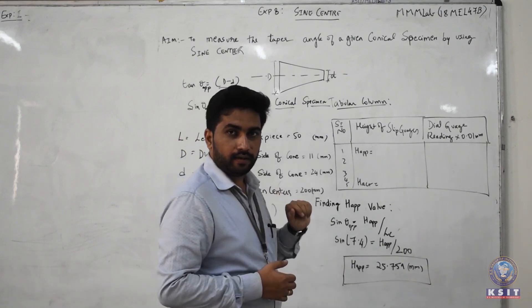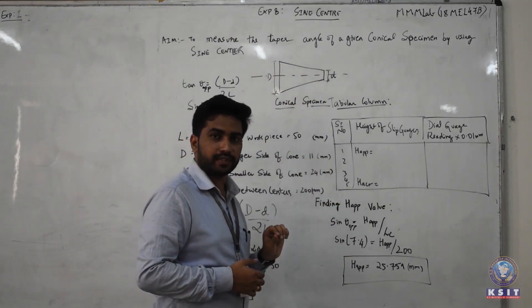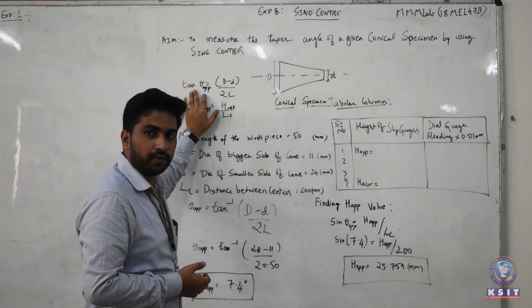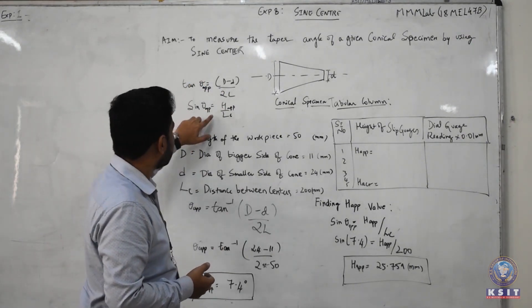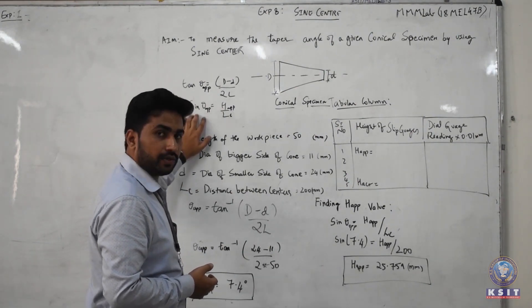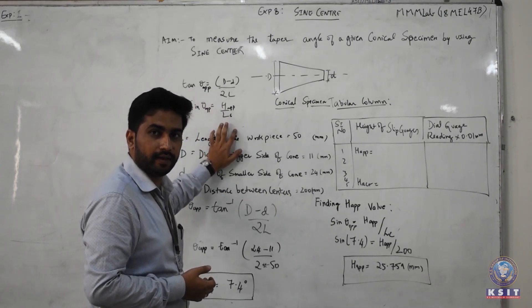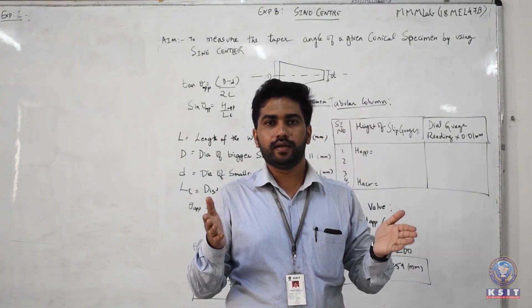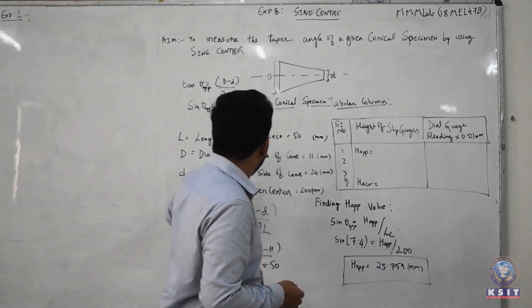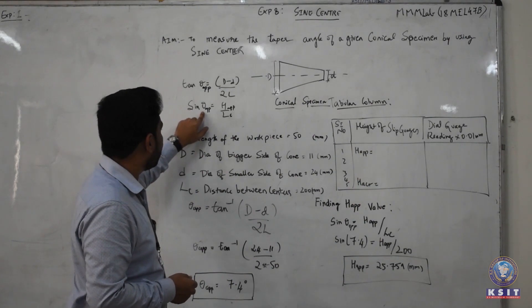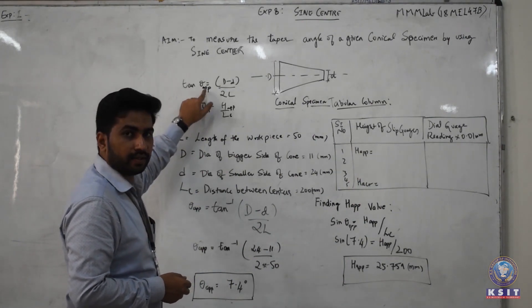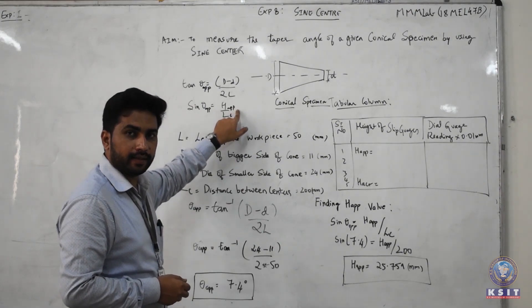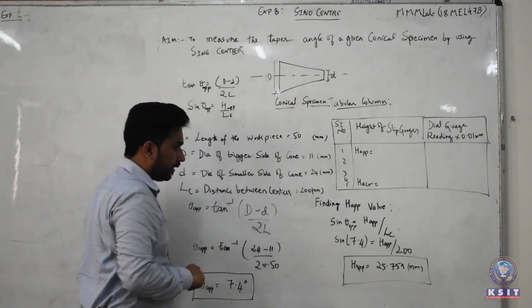We will take the dimensions of the larger diameter and smaller diameter of the conical surface, then apply those values to the tan theta formula to get the approximate value of theta. For the approximate theta value, we can calculate the same using sin theta approximate = H_approximate / Lc, where Lc is the gauge length — the distance between the central axes of the two rollers. So the approximate height is given by: H_approximate = Lc × sin(θ_approximate).